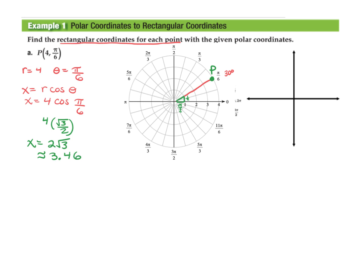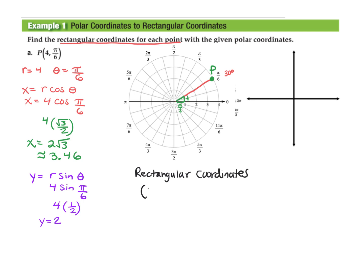For the y value, y = r·sin(θ), where r is 4 and theta is π/6. The sine corresponds with the y value, so sine of π/6 is one half. Therefore y = 4·(1/2) = 2. No rounding needed. So the rectangular coordinates of the point are: exact coordinates (2√3, 2), or approximate coordinates (3.46, 2).